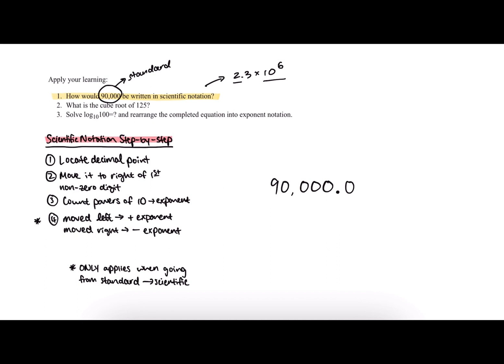The second step says to move our decimal point to the right of the first non-zero digit. Similar to our 2.3, we want to move our decimal point after the first digit that is not zero. In 90,000, that number would be nine, so we want to move our decimal point right after the nine.